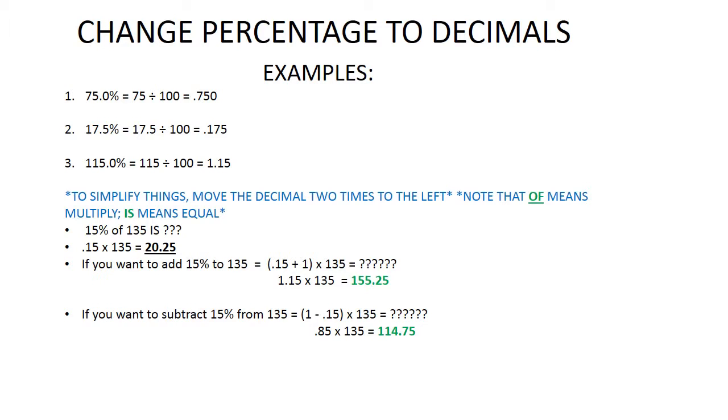Below is an example. Fifteen percent of one thirty-five is what? Of means multiply, is means equal. So point one five times one hundred and thirty-five equals twenty point two five.